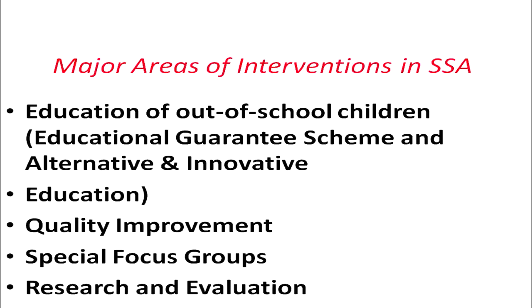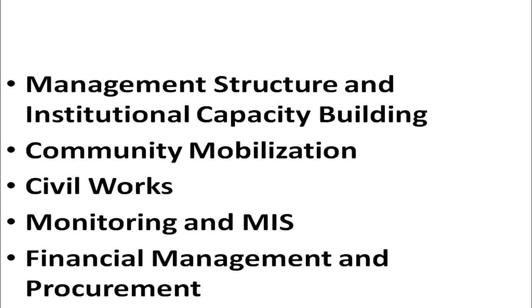Major areas of intervention in SSA are: education of out-of-school children, education guarantee scheme and alternative and innovative education, quality improvement, special focus groups, research and evaluation, management structure and institutional capacity building, community mobilization, civil works, monitoring and MIS, financial management, and procurement. SSA has to perform a lot of tasks — not only emphasizing children's enrollment but also constructing school buildings or rooms in already available schools.